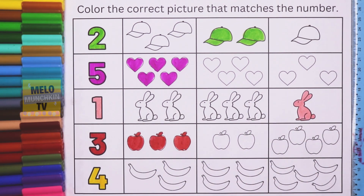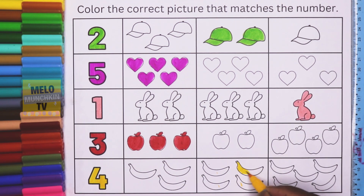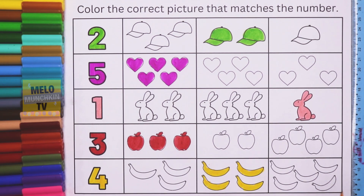Finally, the number is 4 and the color inside is yellow. I need to find 4 bananas. In the first box there are 1, 2, and 3 — not correct. The second box has 1, 2, 3, and 4 — this is correct! The last box has 1, 2, 3, 4, and 5, so that's 5. The middle box has 4 bananas, so I'll color it: 1, 2, 3, and 4.